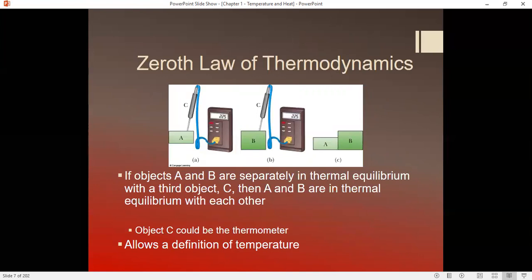Actually, the zeroth law of thermodynamics is related to that. But basically, it says that if object A and B are separately in thermal equilibrium with a third object C, then object A and B are in thermal equilibrium with one another.